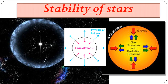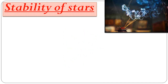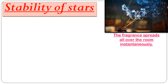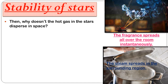Our next topic is the stability of a star — which forces make a star stable. If we burn an incense stick in one corner of a room, the fragrance spreads all over the room, and similarly when we remove the lid of a vessel containing boiling water, steam spreads in the surrounding region. This means hot gas spreads everywhere. So then why doesn't the hot gas in a star disperse into space?